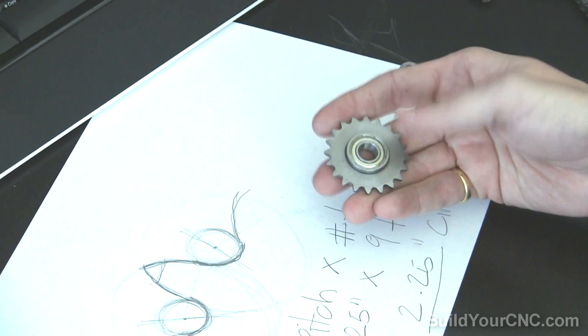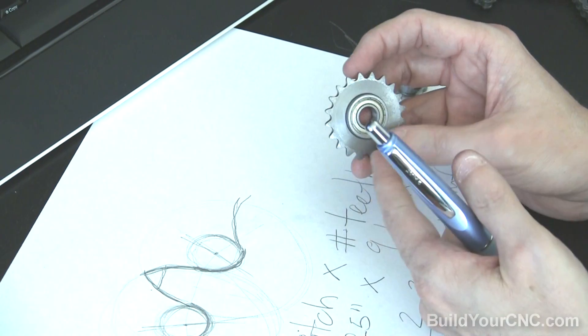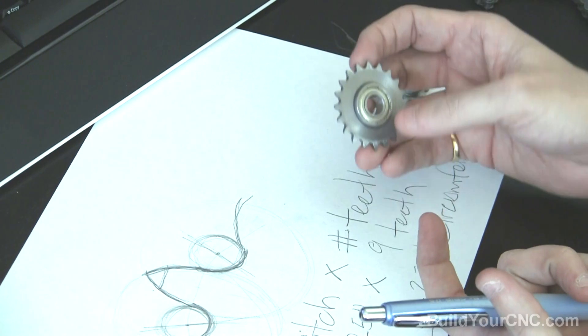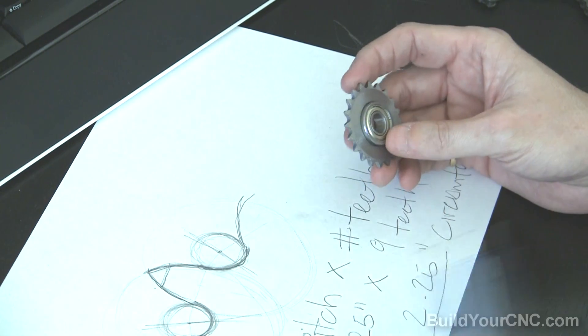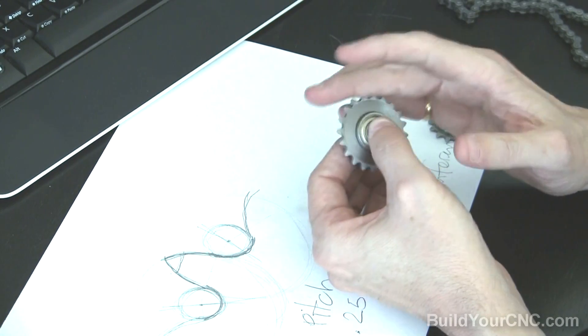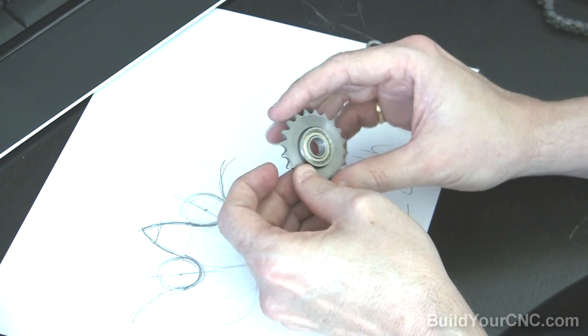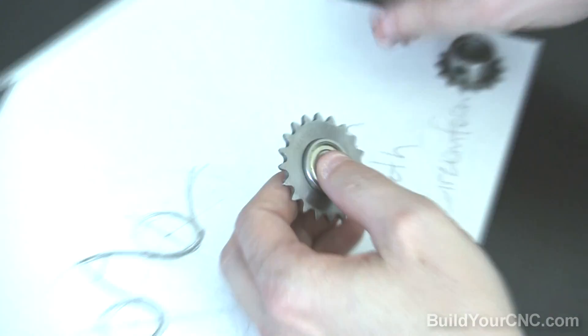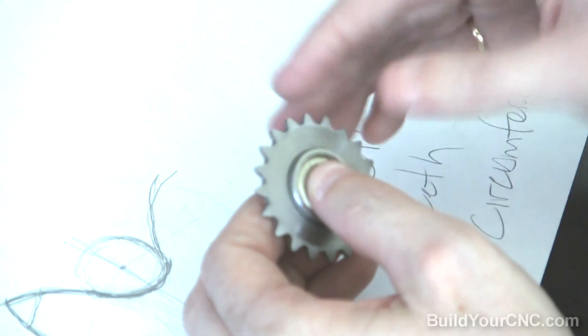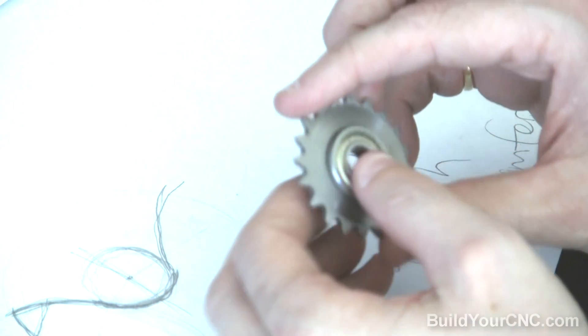In most scenarios, the idler sprocket doesn't really matter how many teeth you have around the idler sprocket. Really, this is a selection for how you're going to be applying your mechanics in whatever you're designing. But generally, it's just a free wheel. And if you are in a tight space, you may want a smaller sprocket. But the number of teeth isn't really going to determine a ratio of any kind unless you have a much more complex configuration.